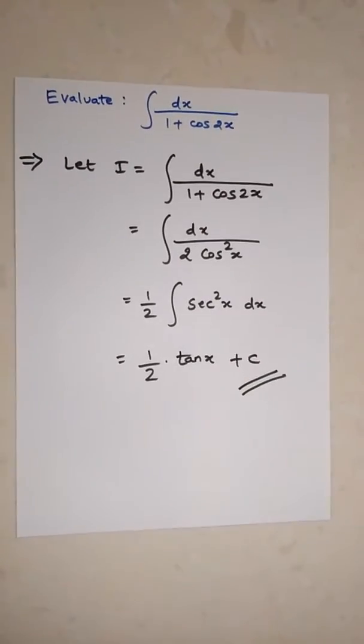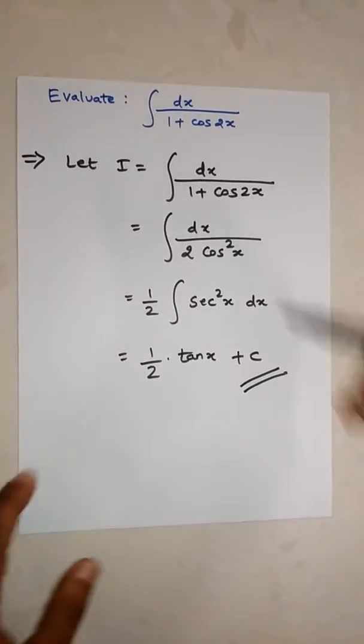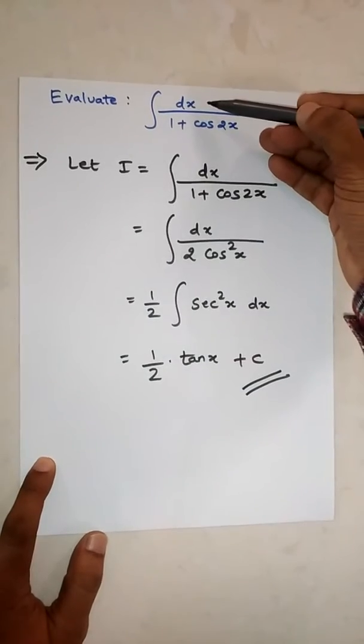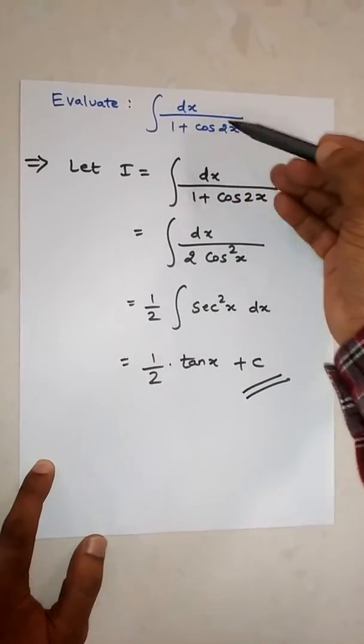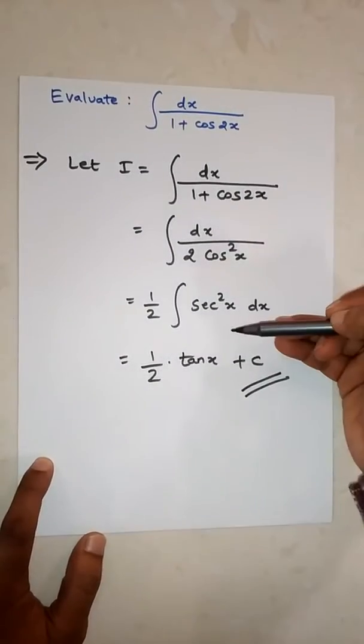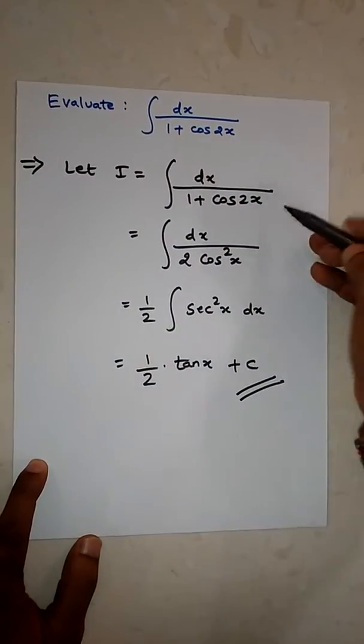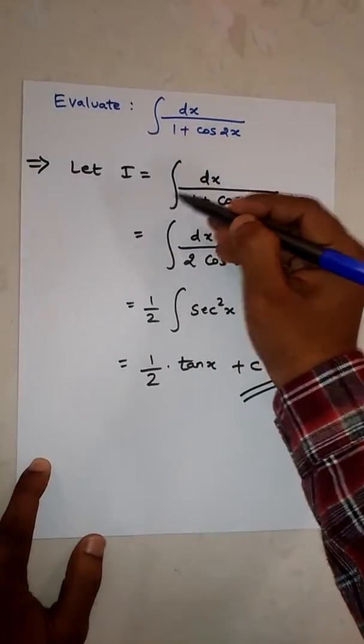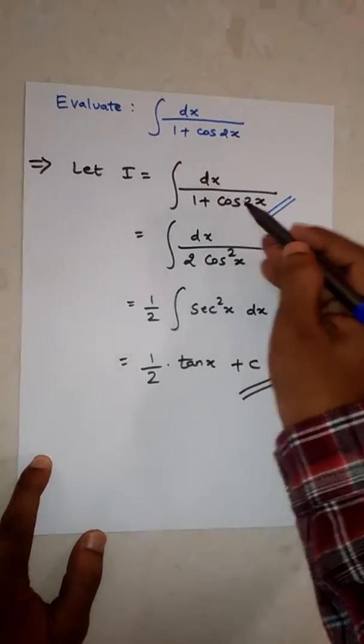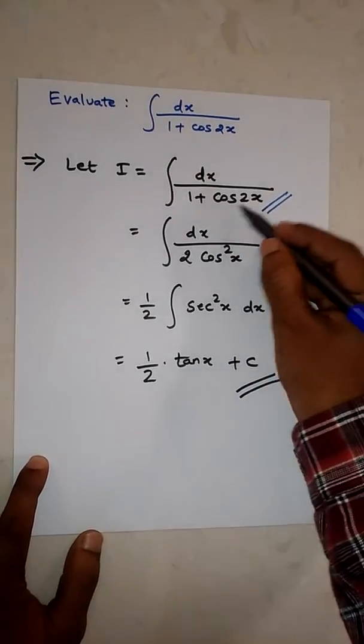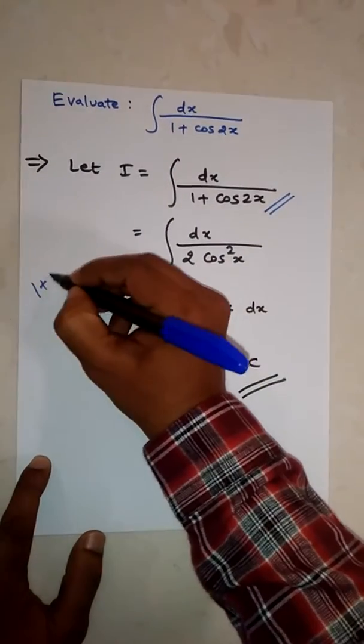Hello friends, today's topic is integration. Evaluate the integral of dx upon 1 plus cos 2x. First thing is, let I equal to the question as it is, that is integration dx upon 1 plus cos 2x.